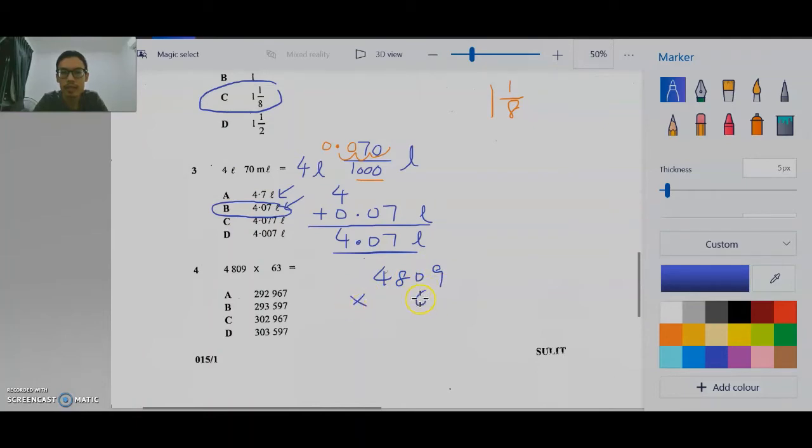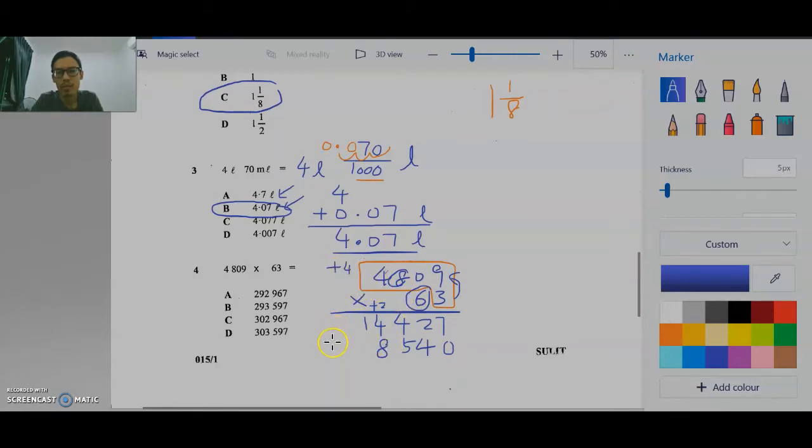Guna 3 untuk darab dulu. Lepas tu, guna 6 untuk darab. 3 darab 9, 27. Boleh terus tulis sebab ini kosong. 3 darab 8, 24. 34. 12, tambah 2, 14. Baris kedua mula dengan kosong. Lepas tu, guna 6 untuk darab. 6, 9, 54. 6, 8, 48. Right 4. 6, 4, 24. Plus 4, 24 plus 4, 28. And then, you add up. Tambahkan. 300 and 2, 967.